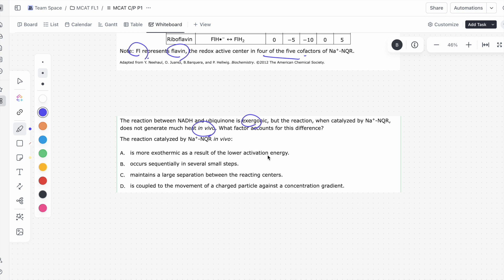A. Is more exothermic as a result of lower activation energy? Yeah, so when you do have an enzyme, it does lower the activation energy, but it's not going to change. The enzyme itself doesn't change how much heat is being released. And even if it were the case, if it did release more heat, it's more exothermic, then we would expect more heat to be generated in vivo. But we know from the question stem that it does not generate much heat in vivo. So A is incorrect.